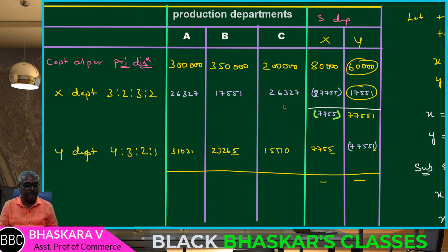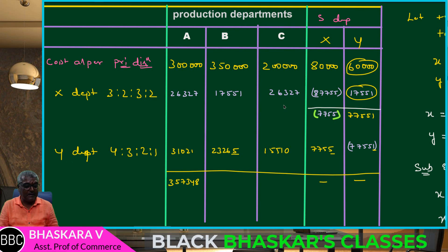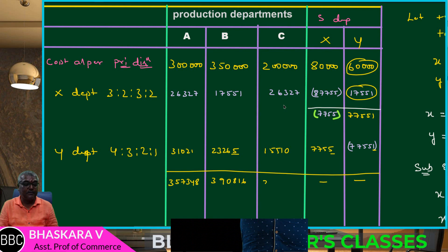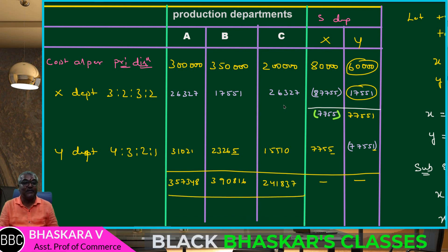Department A: 3,00,000 plus 26,327 plus 31,021 equals 3,57,348. Department B: 3,50,000 plus 17,551 plus 23,265 equals 3,90,816. Department C: 2,00,000 plus 26,327 plus 15,510 equals 2,41,837. This is the total overhead as per secondary distribution.